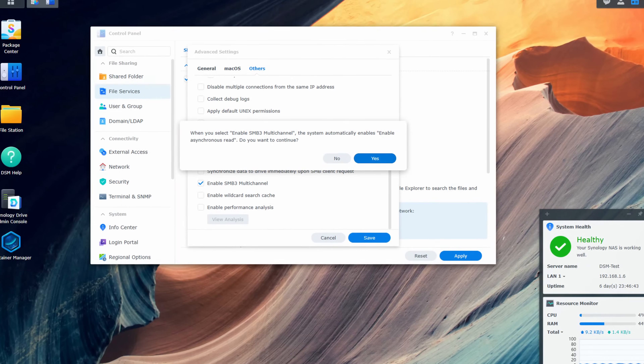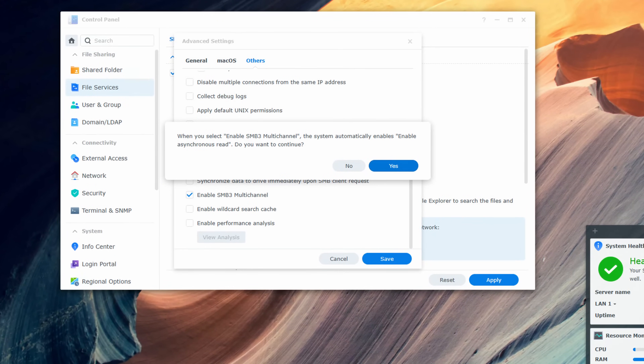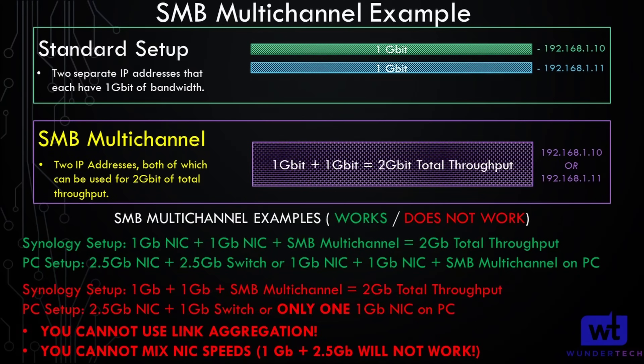SMB Multi-Channel was a necessary and awesome addition. This is a big one because it allows you to utilize all of the network ports on your NAS as one. If you have a device with a 2.5 gigabit port plus a 2.5 gigabit switch, you can actually utilize faster transfer speeds between your NAS and that device by using SMB Multi-Channel. This is arguably the best way to increase transfer speeds between devices and your NAS.